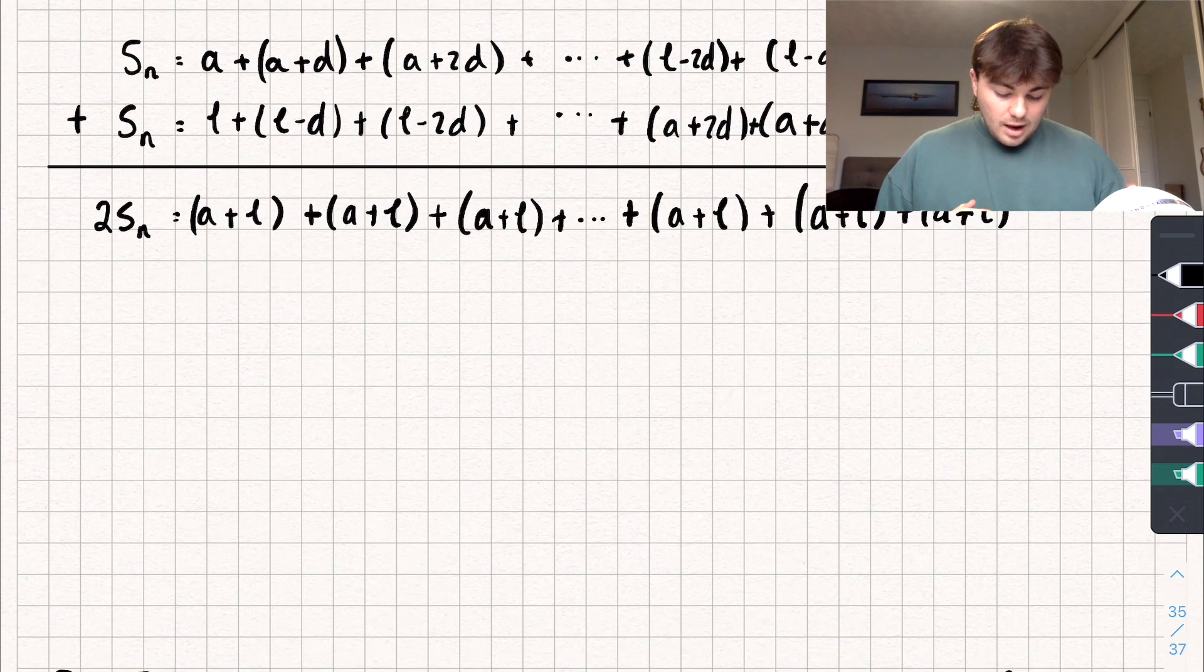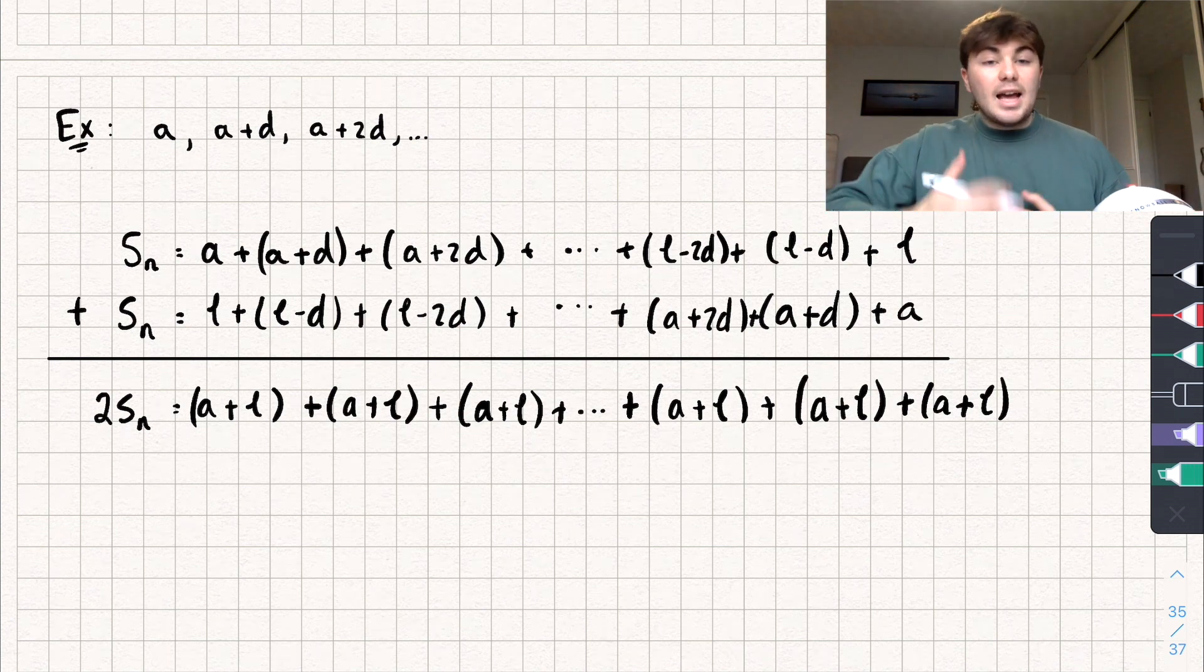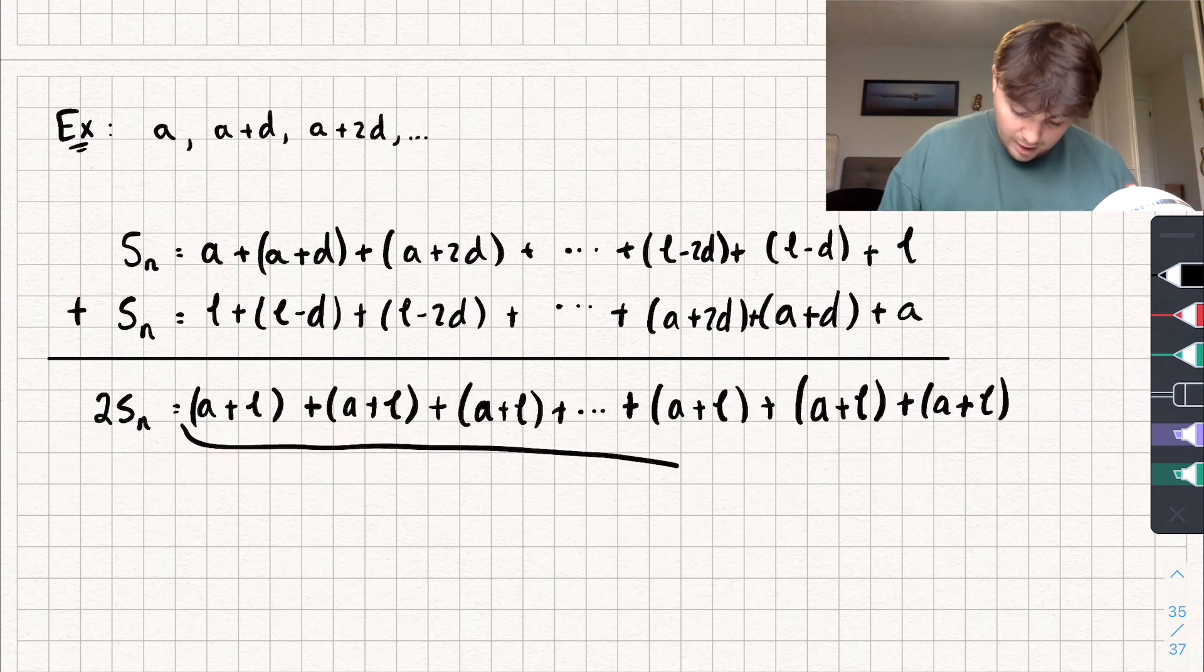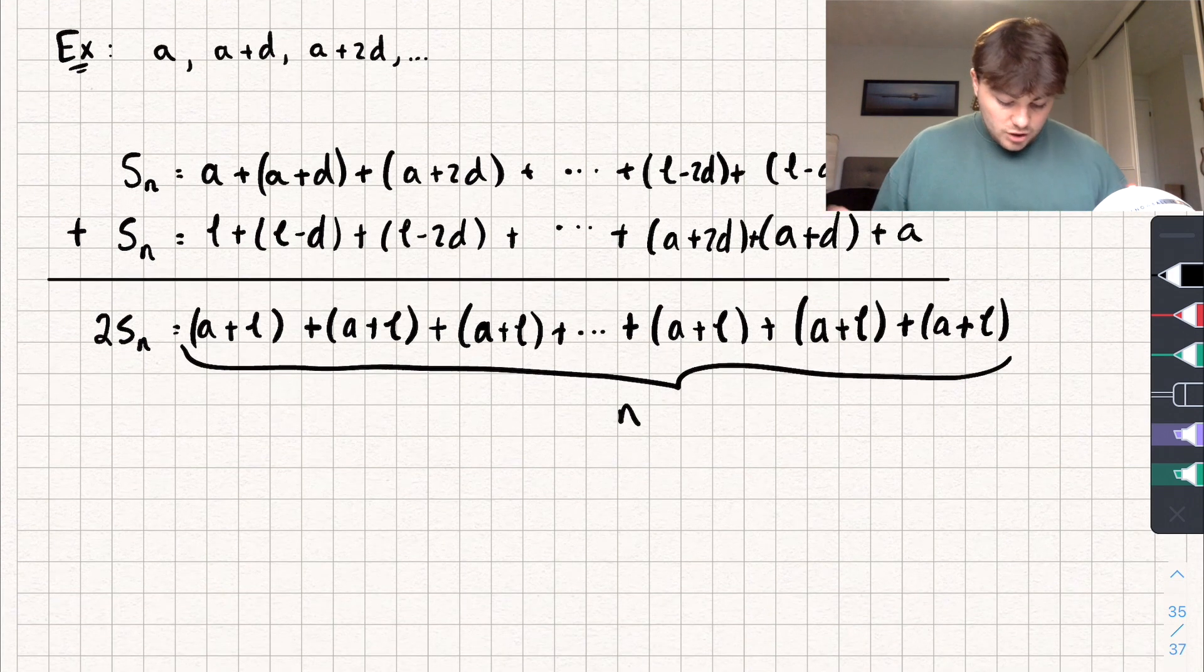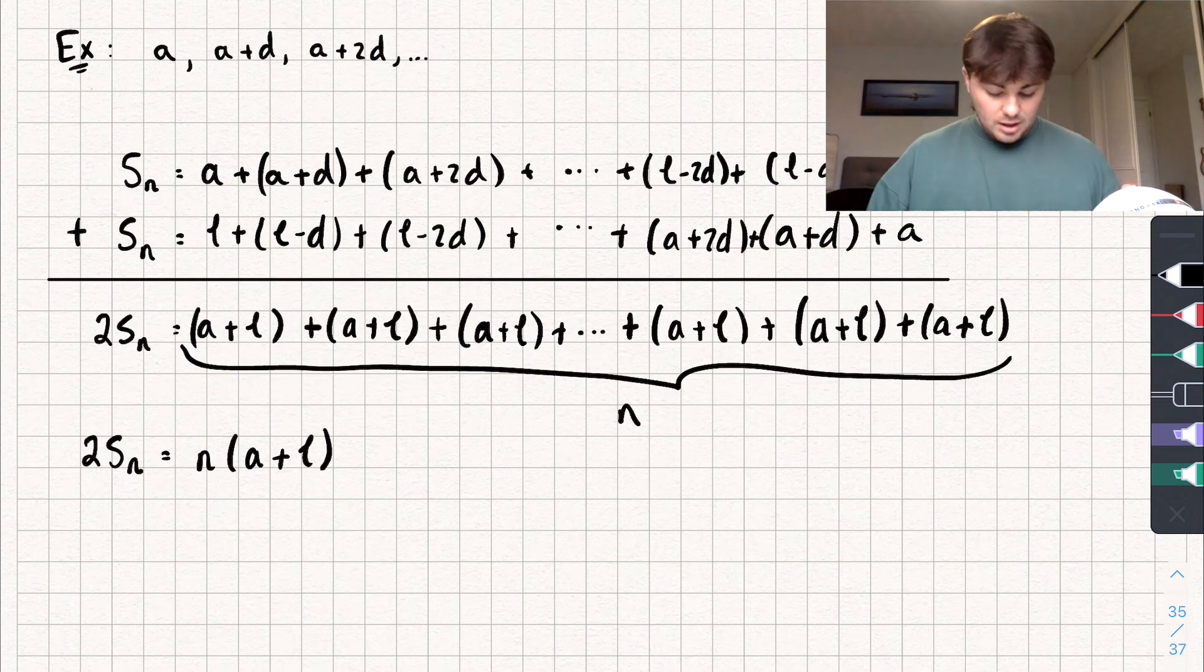So now the question is, how many of these A's plus L's do we have? Well, remember the list was N terms long because we went to the Nth term. So there are going to be N A plus L's. So we could write this as 2 times the sum up to N is equal to N multiplied by A plus L, where A is the first term and L is the last term.